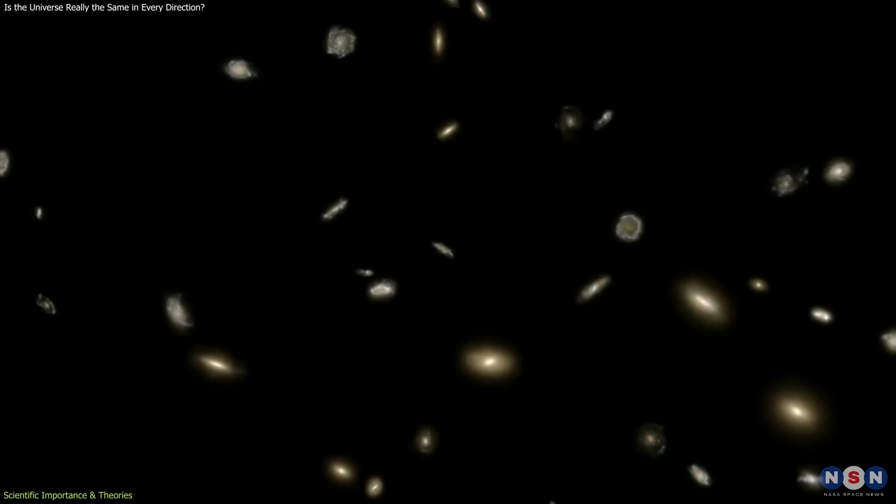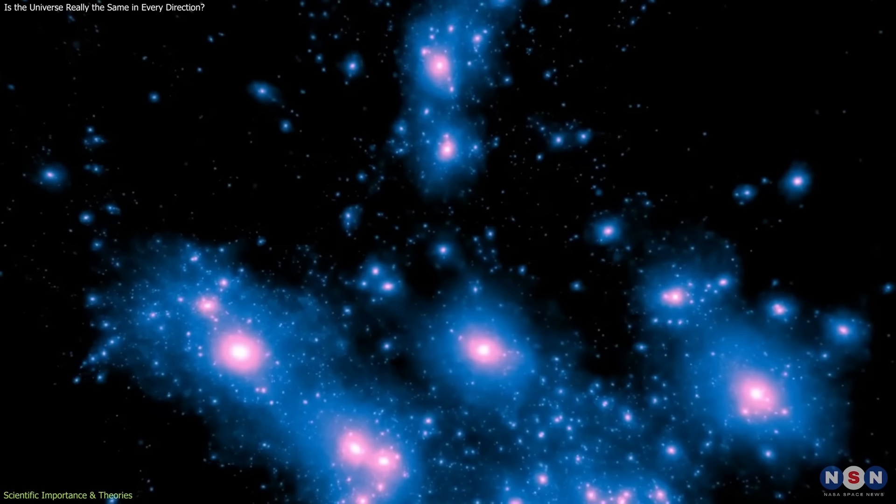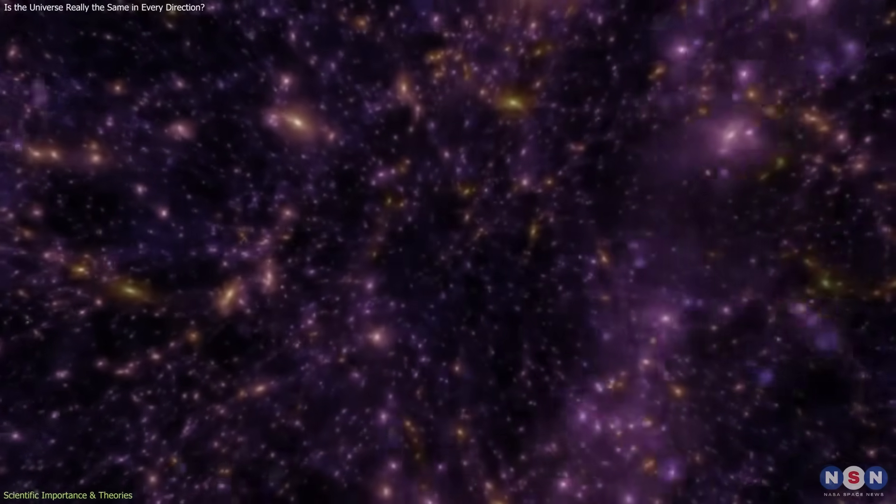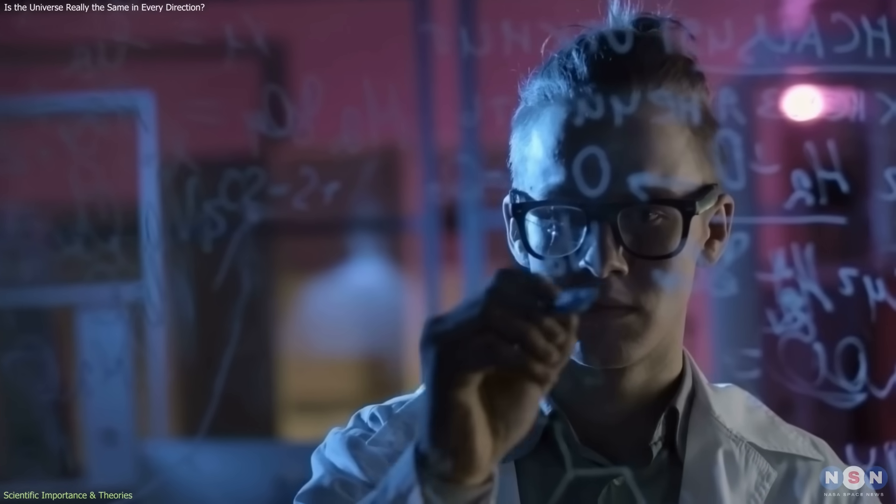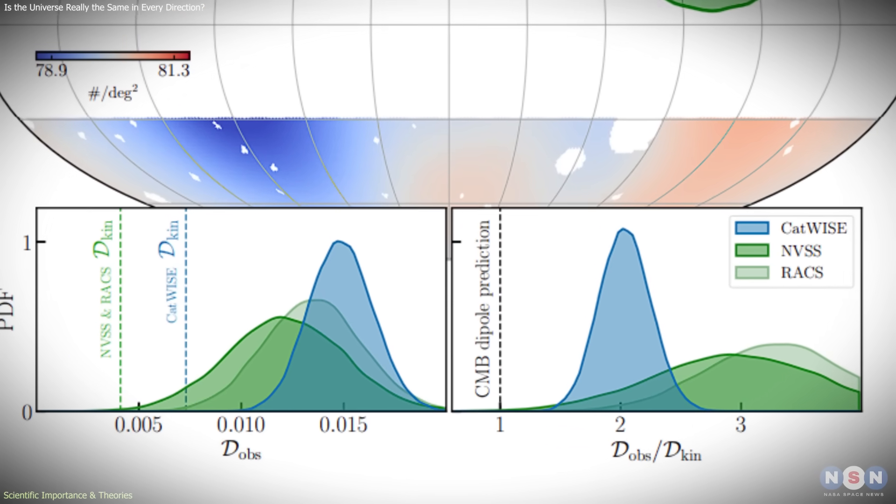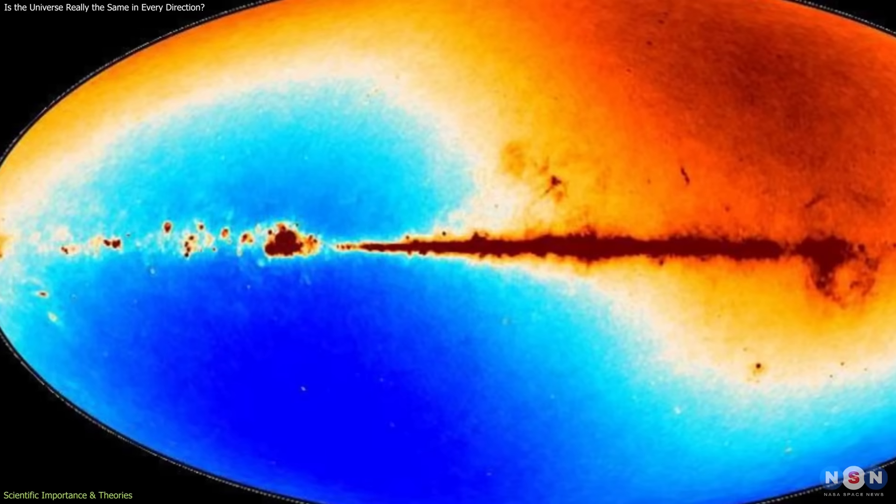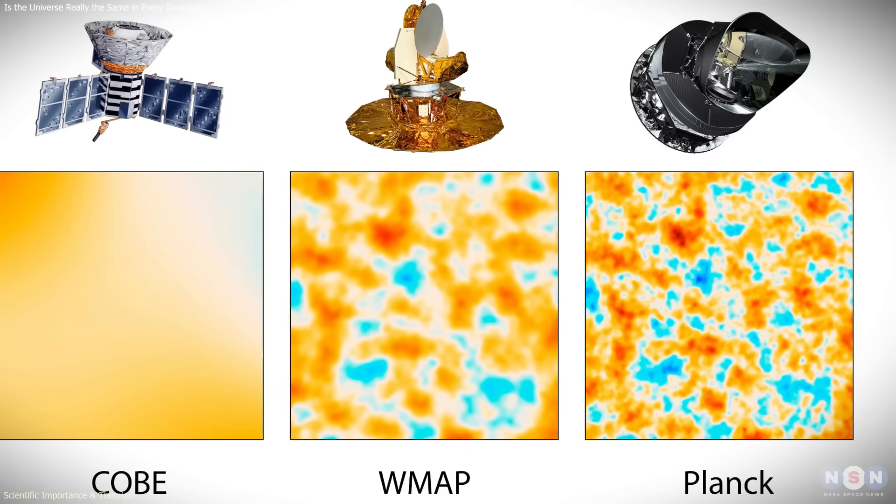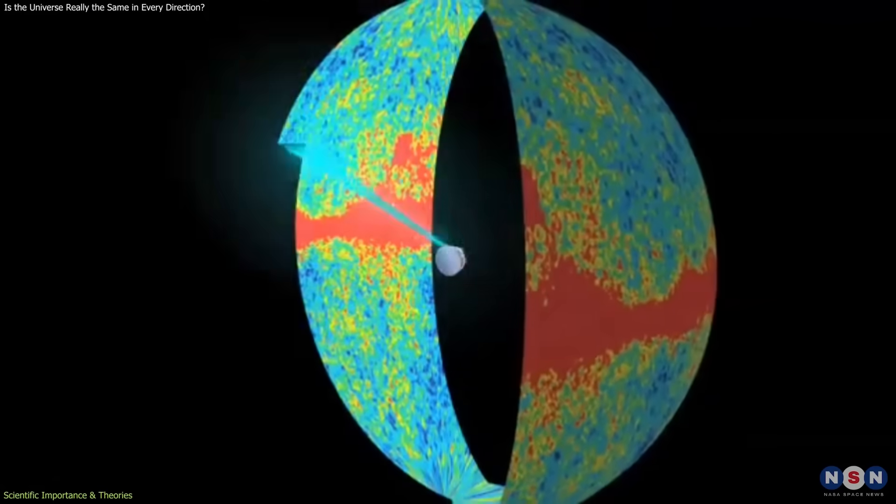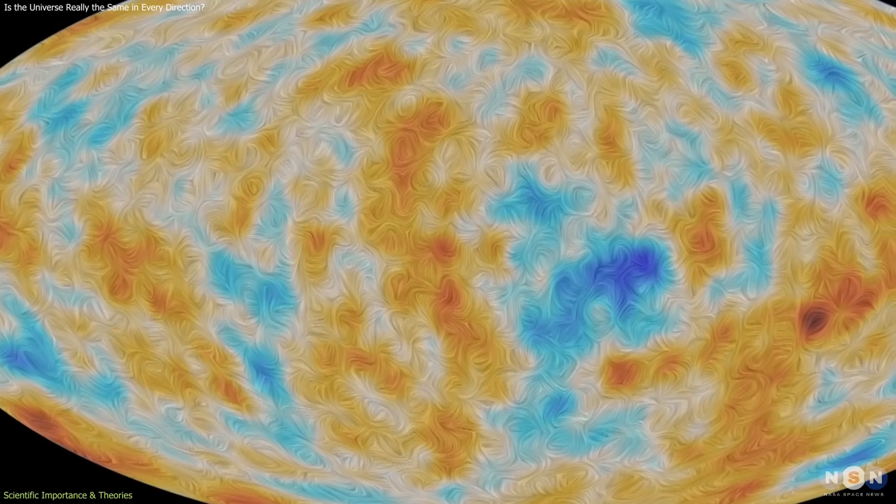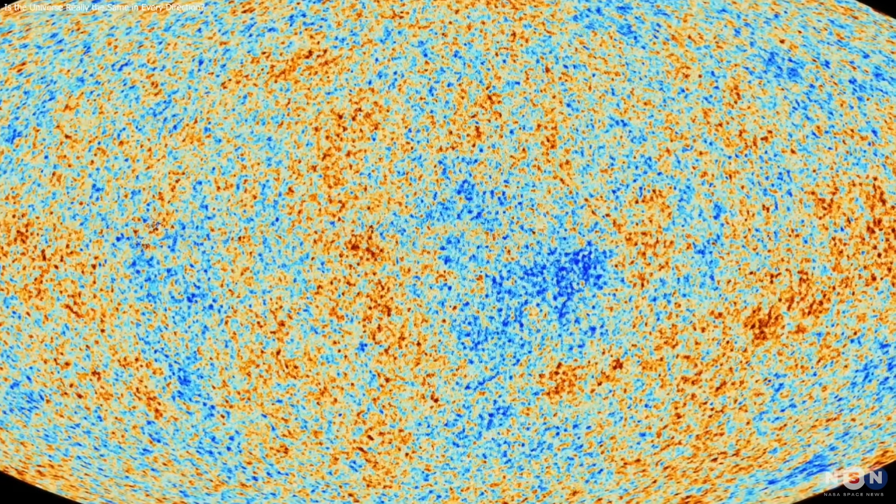More conservative explanations focus on observational effects. These include subtle selection biases and source catalogs, incomplete modeling of foreground contamination, or large-scale structures that extend farther than previously assumed. While these possibilities are being carefully investigated, none has yet provided a complete explanation for the observed amplitude discrepancy. What makes the situation particularly challenging is that the anomaly has persisted as data sets have improved. This persistence is what elevates the cosmic dipole anomaly from a curiosity to a serious issue in cosmology.